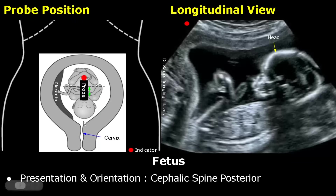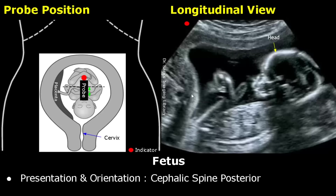On the left side is an image that shows us the position and orientation of the fetus within the uterus, and it also shows the probe placement. On the right side is the image formed when we place the probe in this manner. We can find out the fetal presentation and orientation. This is a cephalic presentation in which the head is directed towards the cervix. When the fetus is in this presentation, the head will be seen on the right side of the image and the feet on the left side. The spine faces the posterior aspect of the uterus, so it is a posterior spine and will be seen down here.